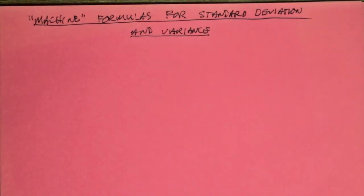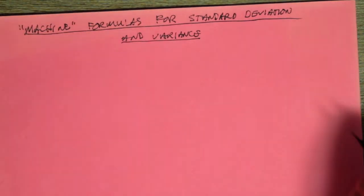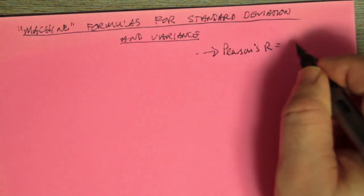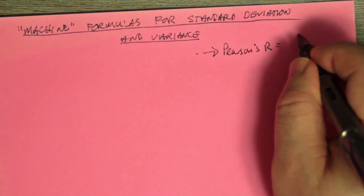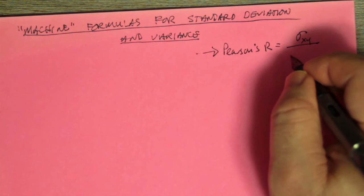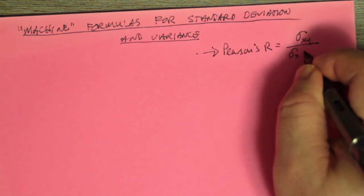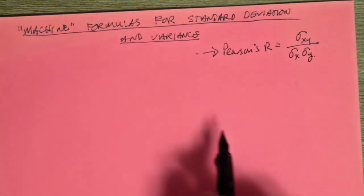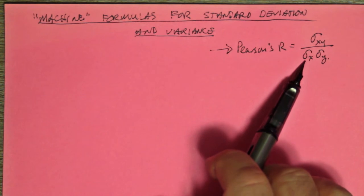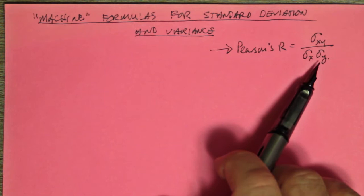I'm going to talk about the so-called machine formulas for standard deviation and variance. These are the ones offered in your textbook, but this goes towards the computation of Pearson's R, which is really the covariance divided by the standard deviation on X multiplied by the standard deviation on Y. I just want to be able to compute one of these, and if we know the formula for standard deviation on X, we just change X to Y and we'll have the standard deviation on Y.